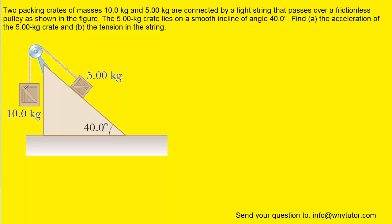Let's start with the 10-kilogram crate. We can represent that crate with just a dot, and then we want to draw the forces that are acting on that dot. We know there's a gravitational force pulling downward on the block, and we can call that M1g, as long as we label the 10-kilogram block with the number 1. There is also a rope connected to the 10-kilogram block that's pulling up on it, so we draw a second force pulling up and label that T for tension.